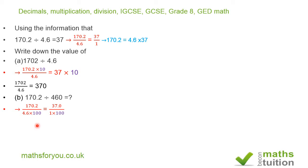Because I multiply my denominator by 100 on the left-hand side, I must also multiply my denominator by 100 on the right-hand side. If you multiply 4.6 by 100, you get 460. If you divide 37.0 by 100, you get 0.37. Therefore, our answer is 170.2 divided by 460 equals 0.37.